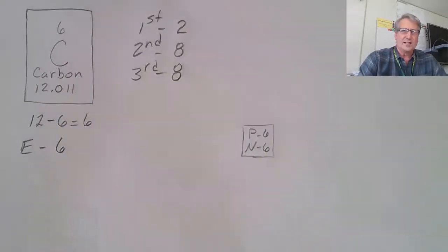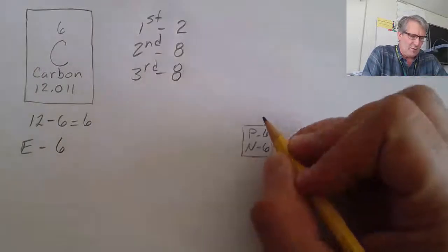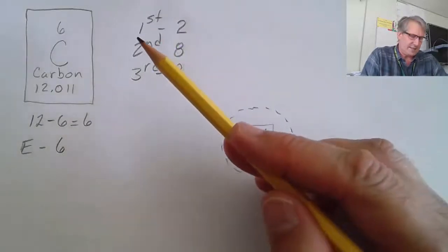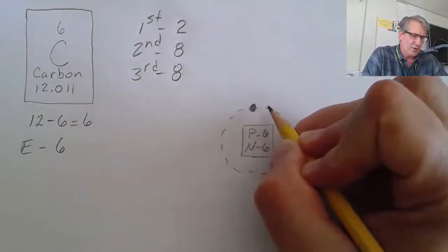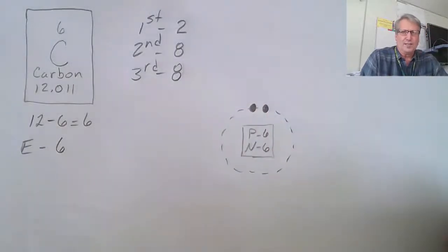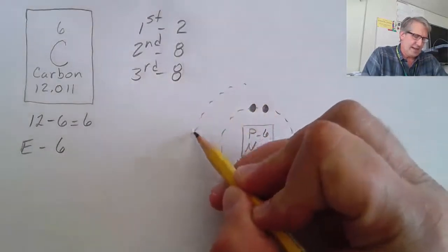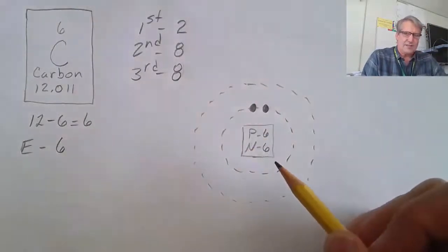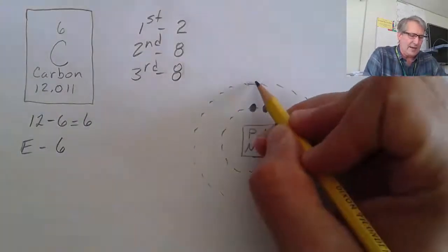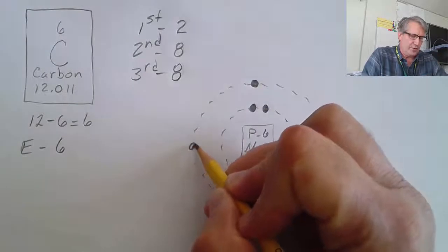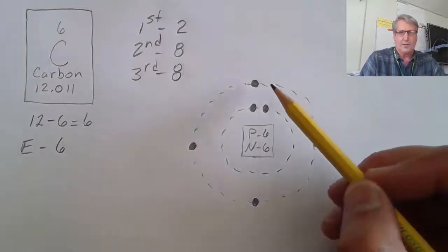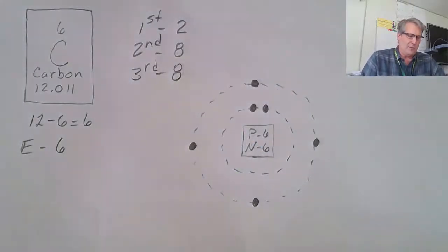So let's distribute our six electrons into the appropriate energy levels. You always start with the first energy level, which holds a maximum of two. We have six, so we put two in the first energy level, but we still have four more. We draw a second energy level and distribute the last four. Since it holds eight, I go around placing one, two, three, four — and if I had more electrons I would start to double them up. That is a Bohr model for carbon.